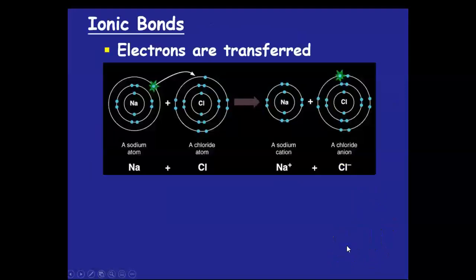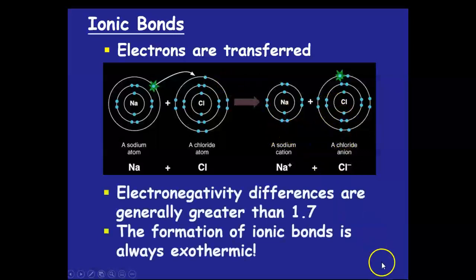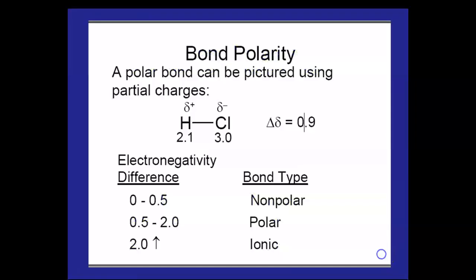So, recapping ionic bonding, as we see, electrons are transferred as from the 3s orbital of sodium to the third energy level of the chlorine, making a chloride anion and a sodium cation here. Electronegativity differences here are generally greater than 1.7, and forming that bond is always exothermic.